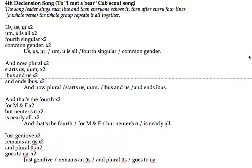Us, us, oo, ee. Oom, oo is all. Four singular. Common gender. [Echo:] Us, us, oo, ee. Oom, oo is all. Four singular. Common gender.